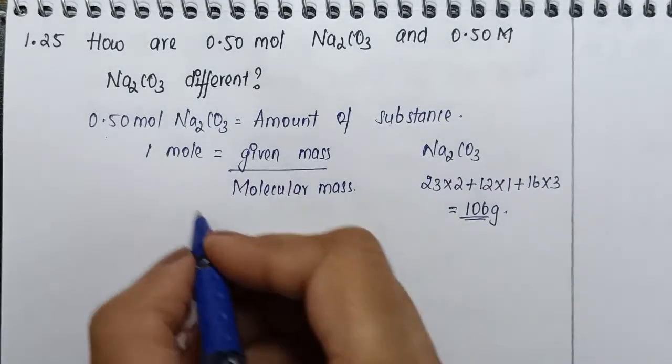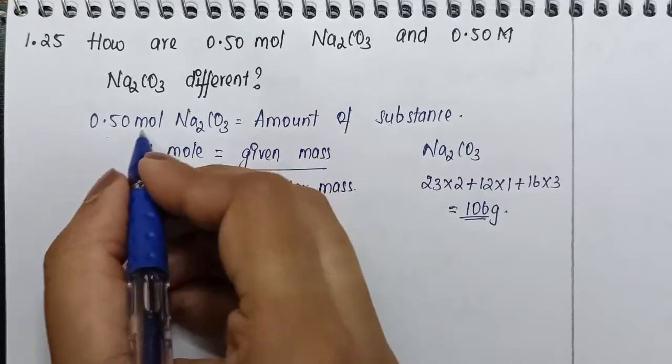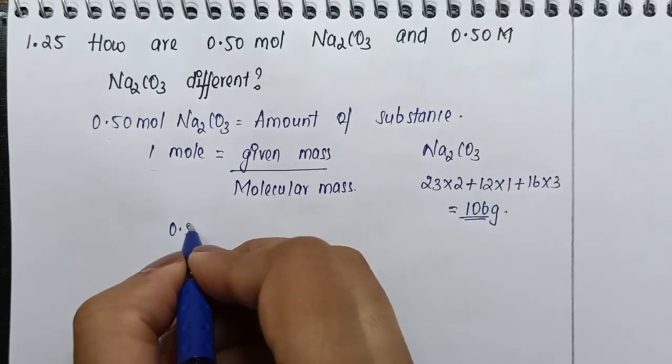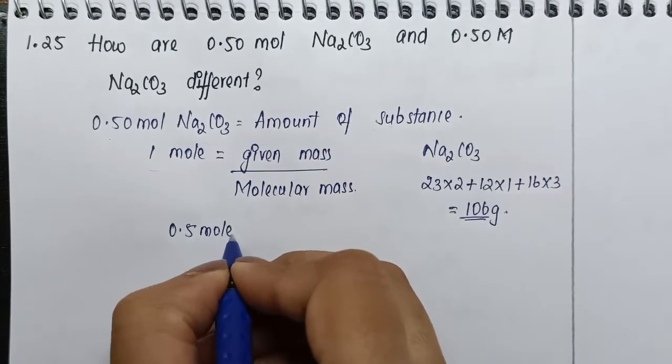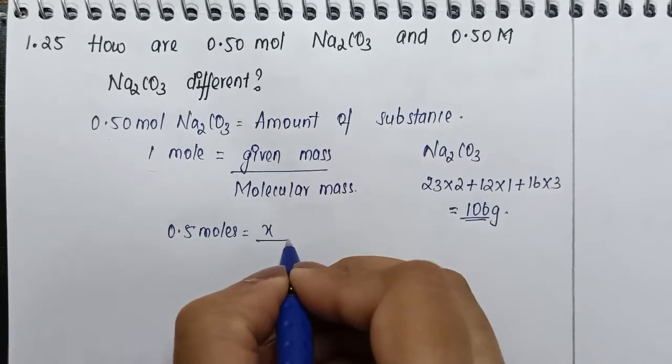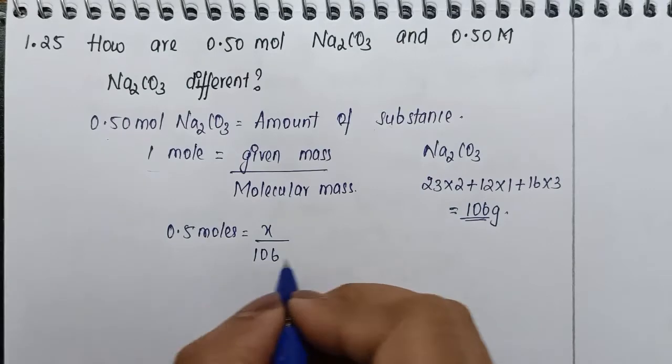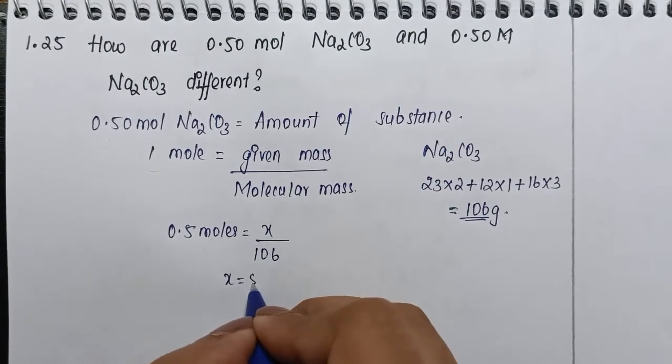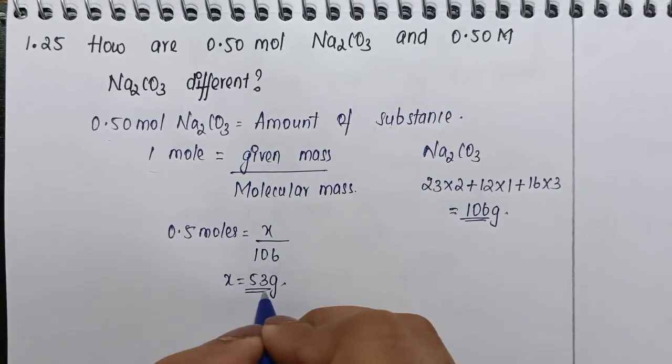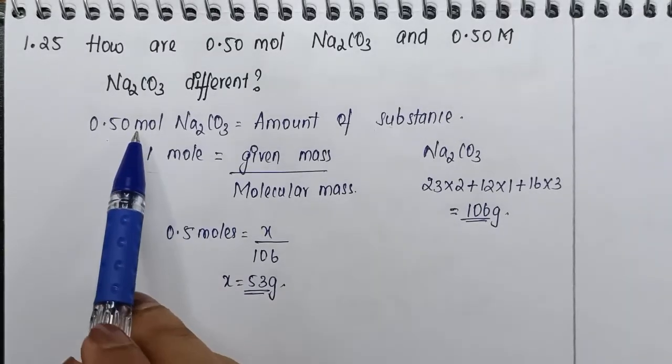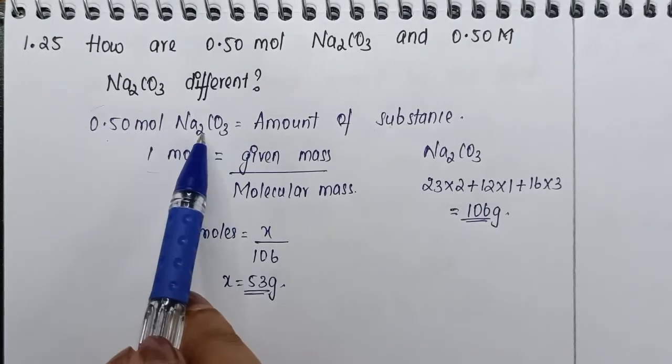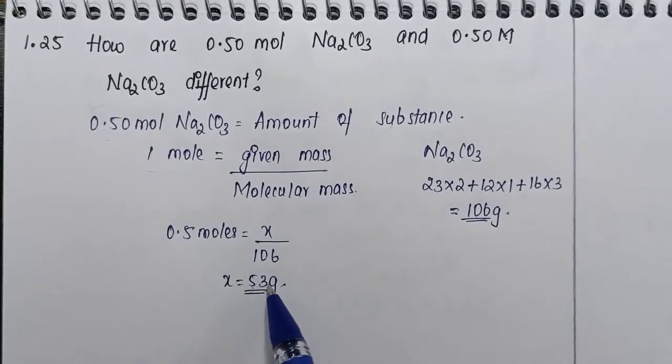Here, mole is given to us as 0.5 moles. Given mass is what we have to find out. Molecular mass is 106. Now when we find out x in this case, we have 53 grams.